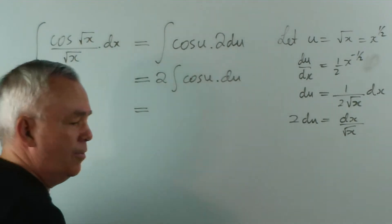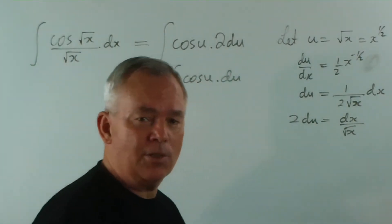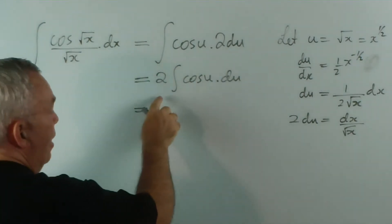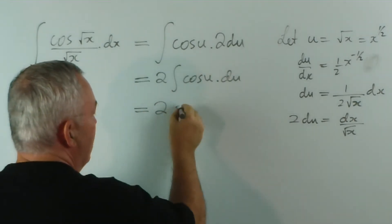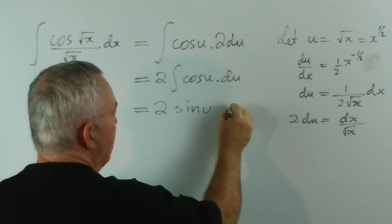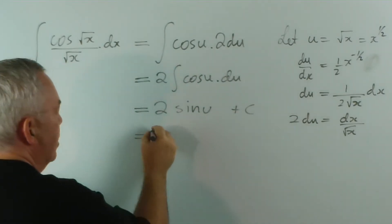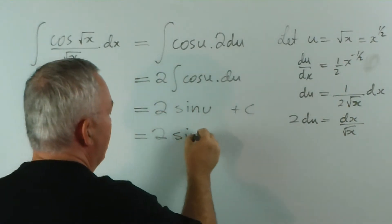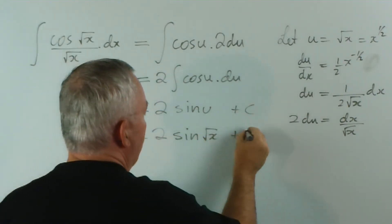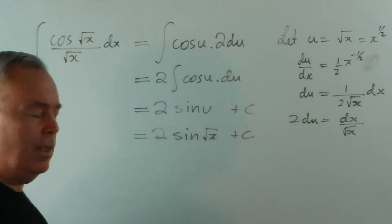There can be surprises when you have radicals, that is, fractional indices. This integral, of course, leave the two there, this integral is sin u plus c, and then we would simply substitute back in. The u value was the square root of x, and there it is.